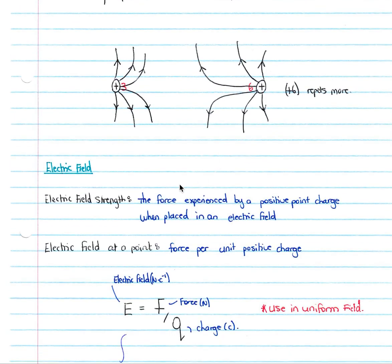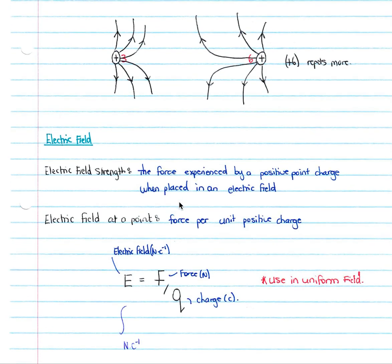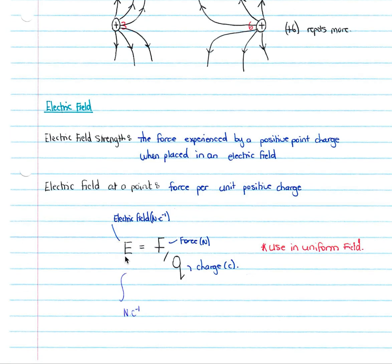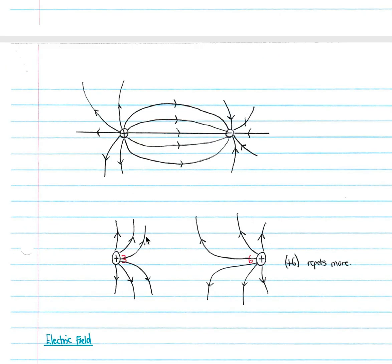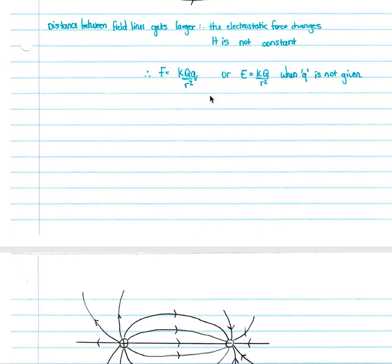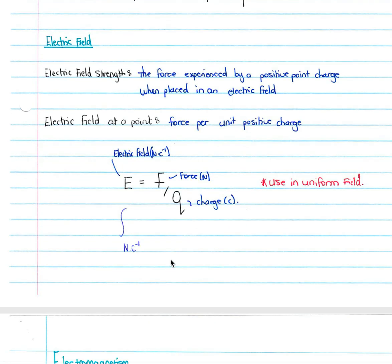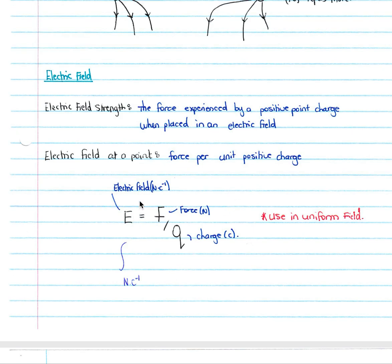Looking at electric fields, our electric field strength is the force experienced by a positive point charge when placed in an electric field. The electric field at a point is the force per unit positive charge. So electric field E, in newtons per coulomb (N·C⁻¹), equals your force in newtons over your charge in coulombs, and you must only use this formula in a uniform field — one in which we have two plates and there is no variance in our field lines. So you will use E equals F over Q in a uniform field to work out your electrostatic force.